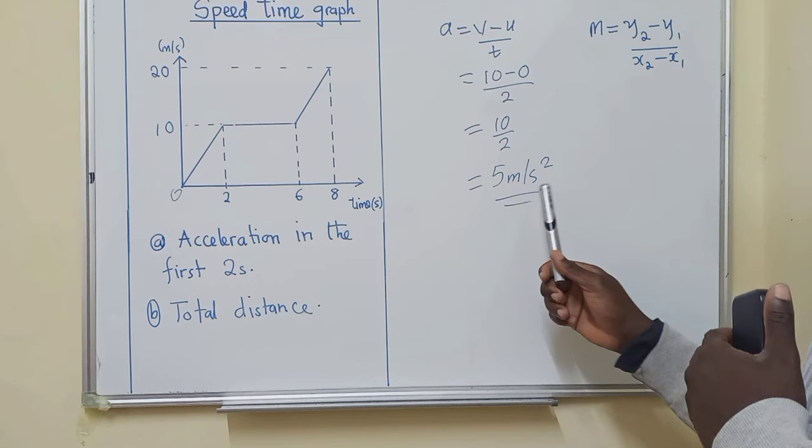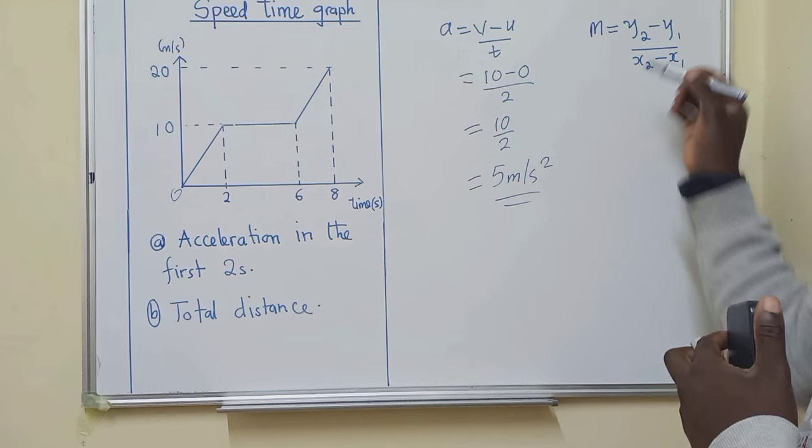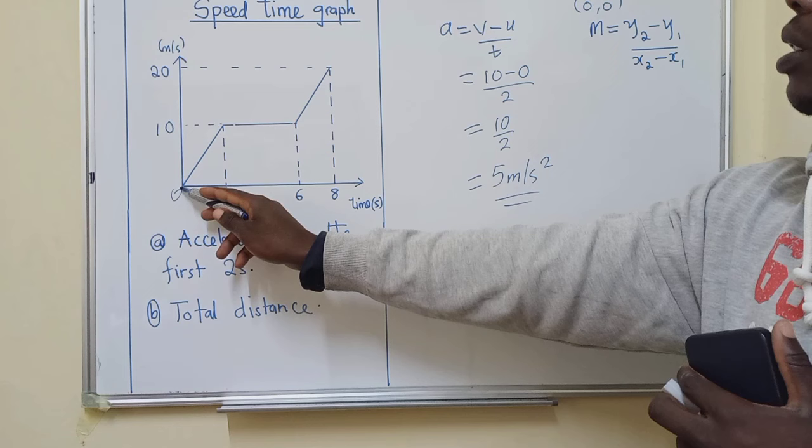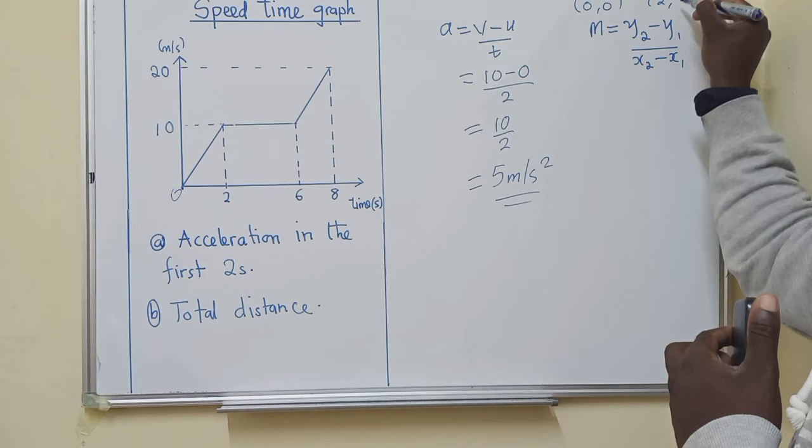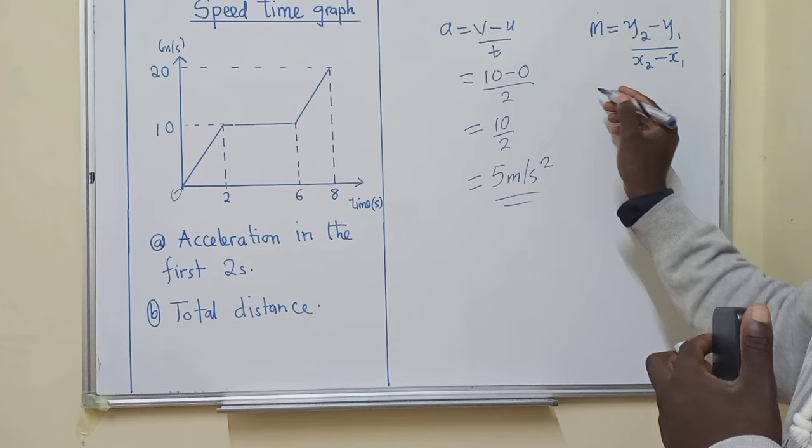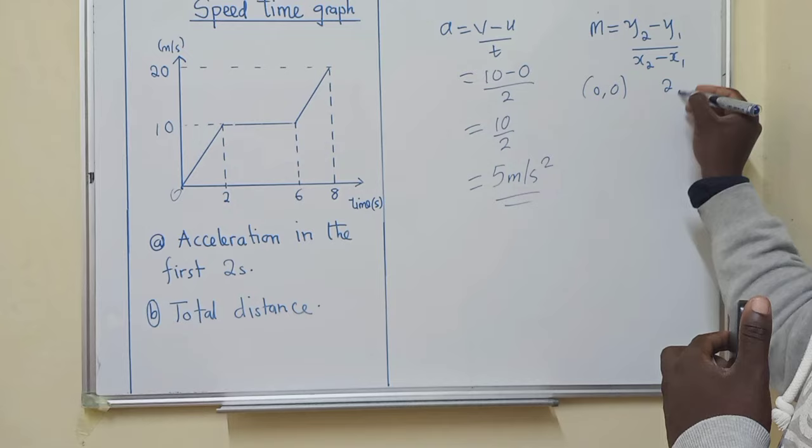Let's try to go by this. For this one, the first thing must be to identify the coordinates. Where is it starting from? This is zero comma zero and here it's two comma ten. So let me just write here so that you can see. This is 0,0. The first second is 2,10, so two right here comma ten there.